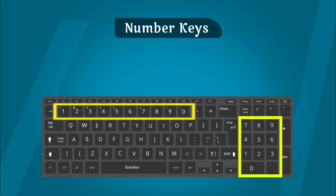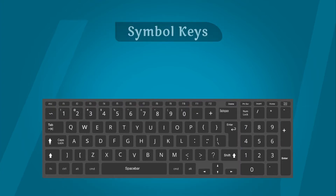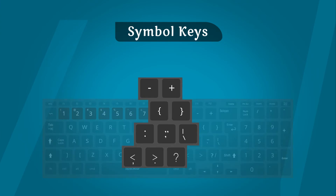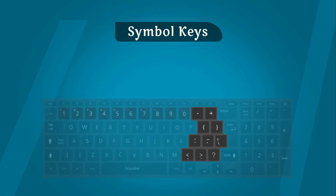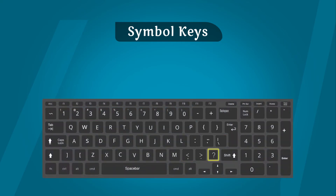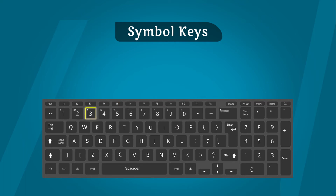Keyboard पर दो जगों पर number keys होती है। Symbol keys: इन keys पर special signs और symbols होते हैं जो letters keys के right में होते हैं, जैसे add the rate, hashtag, dollar, percentage, asterisk, etc.